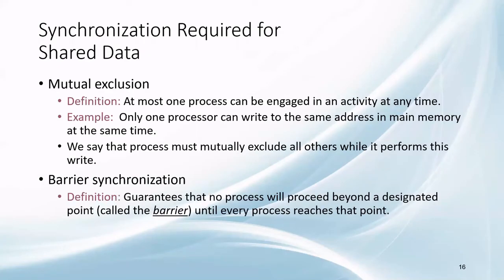Various kinds of synchronization are needed by the processors to work in a centralized system. Mutual exclusion means at most one processor can engage in a specified activity at a time — a concept from operating systems. Barrier synchronization guarantees that no processor will continue beyond a barrier point until every processor has reached it. It is like a relay competition where an athlete waits for all competitors to reach the lap finish before starting the next lap.